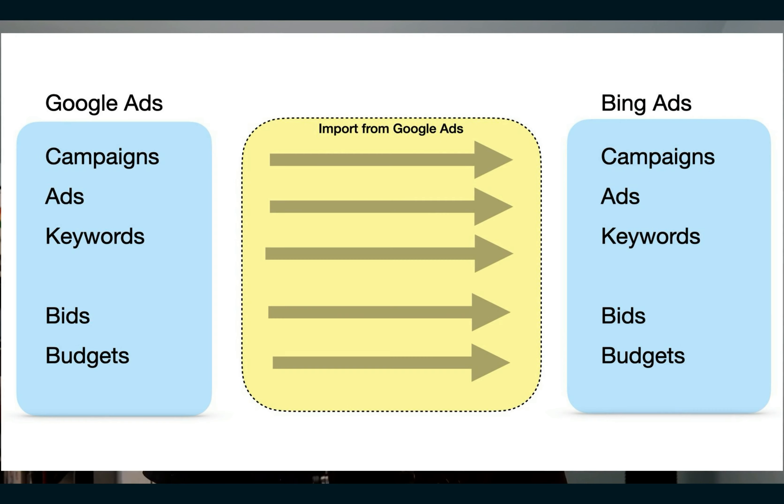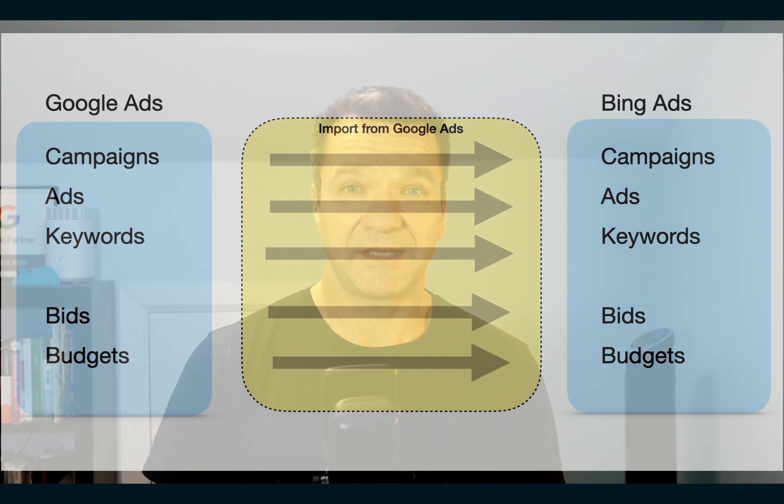When I audit pay-per-click accounts for e-commerce online stores, I usually find mostly Google Ads and barely any usage of Bing Ads. Most of the time people say they had initially tried Bing by copying their Google Ads over to Bing and leaving them run. But then they spend a lot of budget without making many sales, so they stopped using Bing Ads except maybe for their brand search campaign.